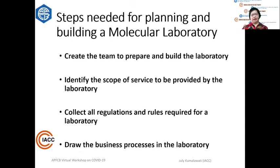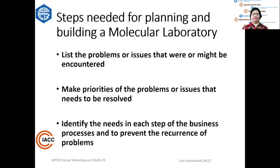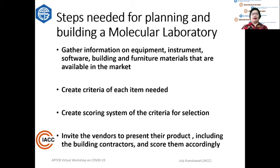After that, you need to draw the business process that is going to be implemented in the lab. But before you start with all the details, you first have to list the problems or issues that were or might be encountered during our lab surveys, and make priorities of which problems or issues need to be resolved. Then identify the needs of each step of the business process you have drawn to prevent the recurrence of problems.